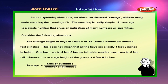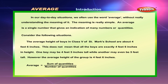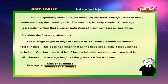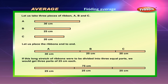This does not mean that all the boys are exactly 4 feet 6 inches in height. One boy may be 4 feet 5 inches tall while another may even be 5 feet tall. However, the average height of the group is 4 feet 6 inches. Average is equal to the sum of quantities divided by the number of quantities.